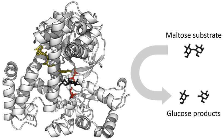In 1926, James B. Sumner showed that the enzyme urease was a pure protein and crystallized it; he did likewise for the enzyme catalase in 1937. The conclusion that pure proteins can be enzymes was definitively demonstrated by John Howard Northrup and Wendell Meredith Stanley, who worked on the digestive enzymes pepsin, trypsin, and chymotrypsin. These three scientists were awarded the 1946 Nobel Prize in Chemistry.